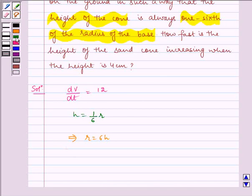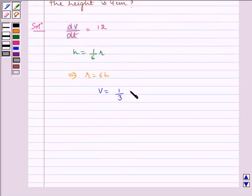We know volume of cone is given by V = (1/3)πr²h. That is, V = (1/3)π(6h)² × h.